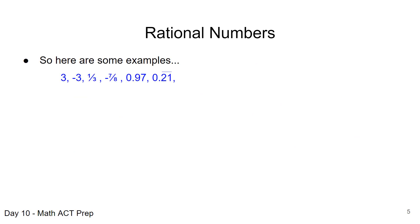So here are some examples. When we're talking about rational numbers, we're talking about whole numbers—they can be integers, they can be positive, they can be negative. We're talking about fractions—that's part of the definition—one-third, negative seven-eighths, again positive or negative. Any kind of decimals that are finite, that have a distinct endpoint: 0.97.